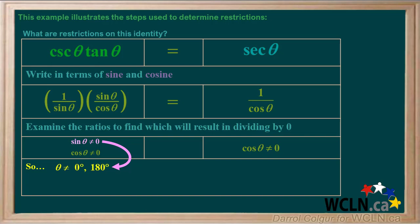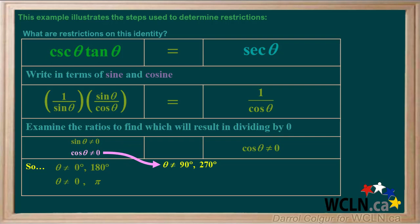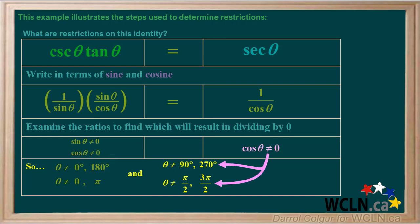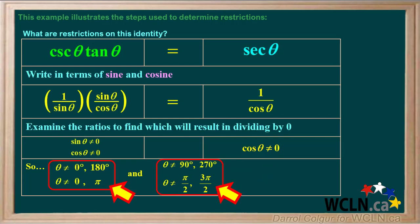The sine of zero degrees and 180 degrees is equal to zero, so angle theta cannot be zero degrees or 180 degrees. Zero degrees is zero radians and 180 degrees is pi radians, so we'll also include these in our restrictions. The cosine of 90 degrees and 270 degrees is equal to zero, so angle theta cannot be 90 degrees or 270 degrees. 90 degrees is pi over 2 radians and 270 degrees is 3 pi over 2 radians, so these can be added to our restrictions. The fact that cosine theta cannot be equal to zero on the right-hand side also leads to these restrictions. So we can state that these are the restrictions on this identity.